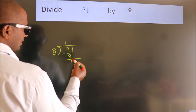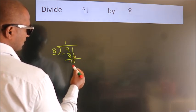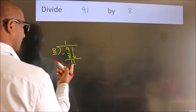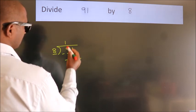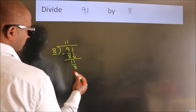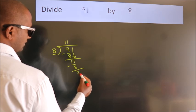After this, bring down the beside number. So, 1 down. So, 11. A number close to 11 in 8 table is 8 once 8. Now, we subtract. We get 3.